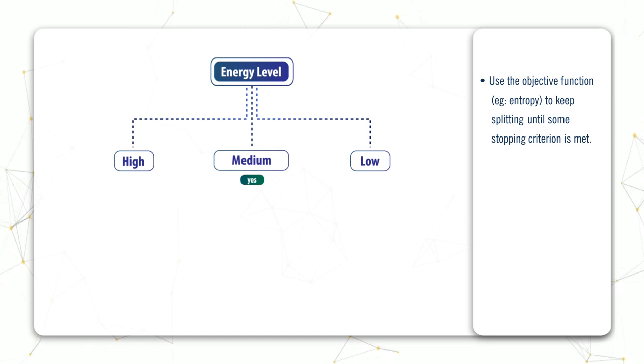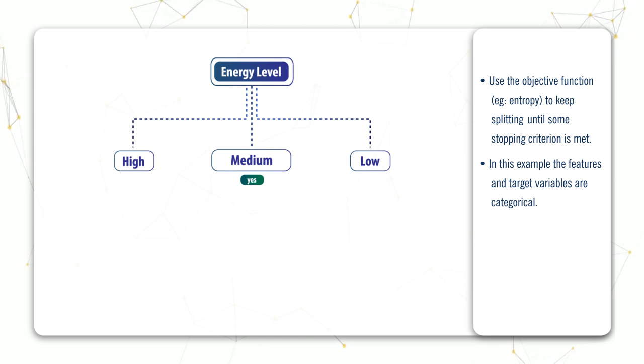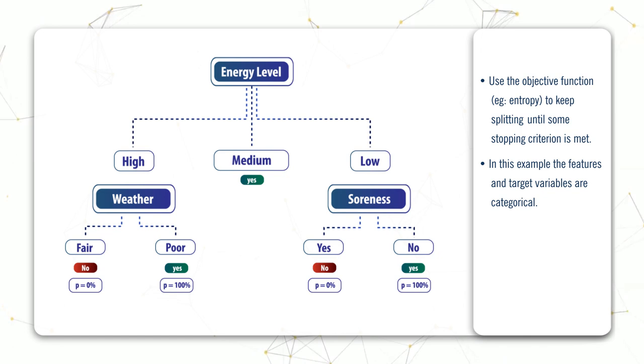Now in the example we've been looking at, all our variables have been categorical. For example, energy levels were either low, medium, or high; weather was either fair or poor; and Alice either did or did not go for a run—nothing in between. But what happens in your data set when there are now continuous variables as well?